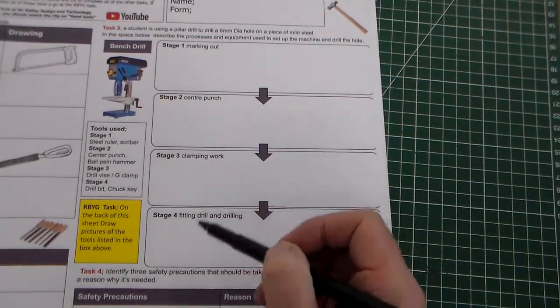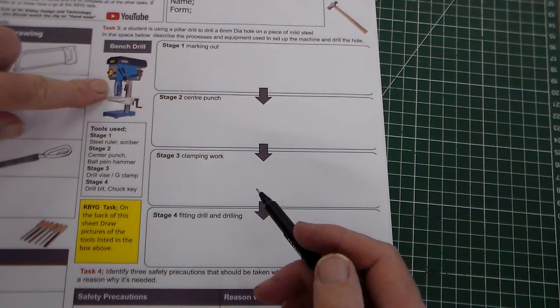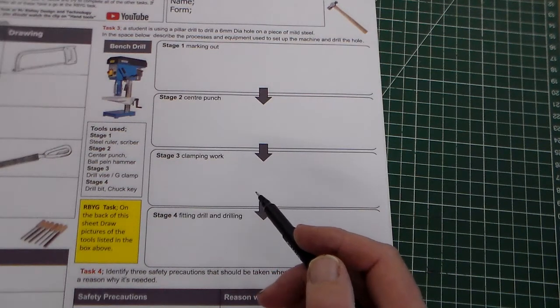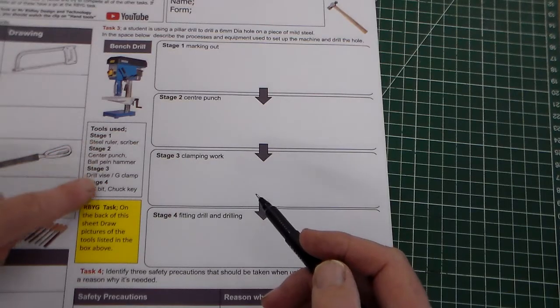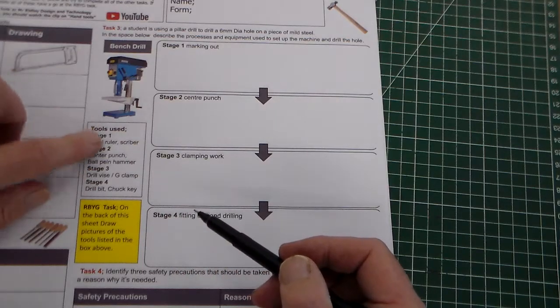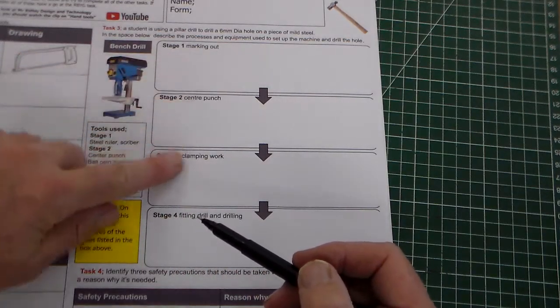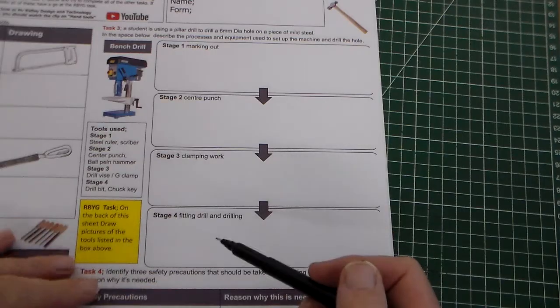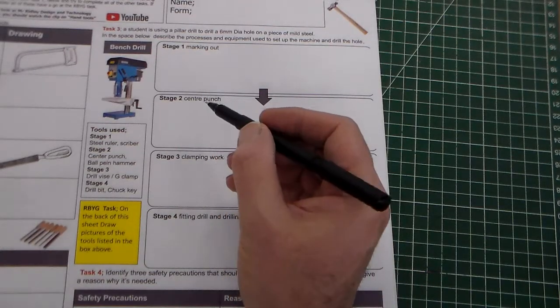So we've got one, two, three, four stages. There's a bench drill or pillar drill that's going to be used to drill a hole in a piece of metal. And down here we've got the tools that are used, so we've got steel ruler, scriber, centre punch and so on. So we've got the tools here and we need to fill in these stages. This would be about a 10 mark question.